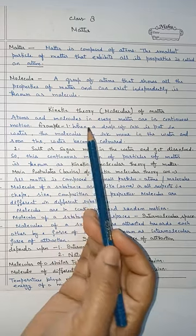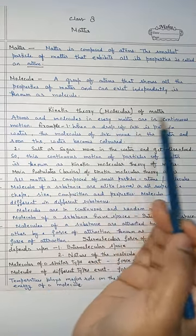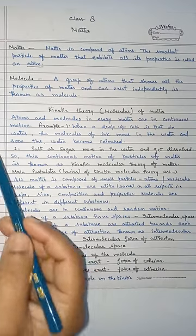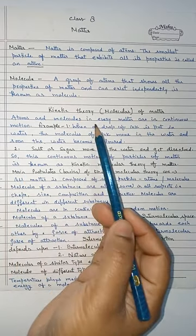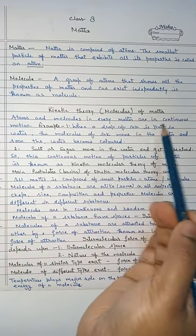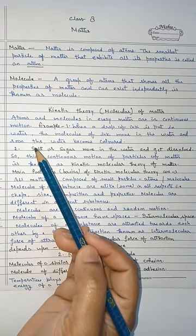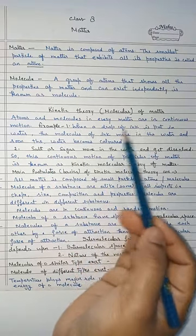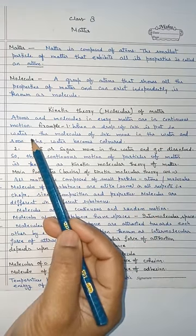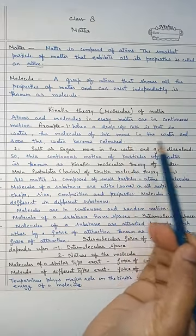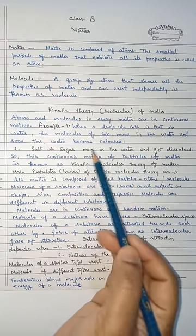Now, the most important part of this chapter is kinetic molecular theory of matter. We know that atoms and molecules in every matter are in continuous motion. They always move. For example, when a drop of ink is put in water, the molecules of ink move in the water and soon the water becomes colored.